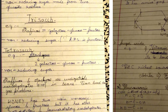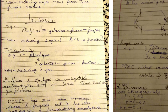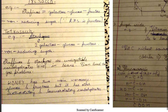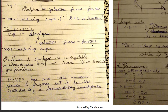Since raffinose has fructose at the end, it will have no free OH on the right-hand side, making it a non-reducing sugar. Tetrasaccharides — the example is stachyose, which has two galactose, glucose, and fructose. It is again a non-reducing sugar because fructose is on the right-hand side. Raffinose and stachyose are undigestible carbohydrates, mostly present in beans, and they lead to gas problems.